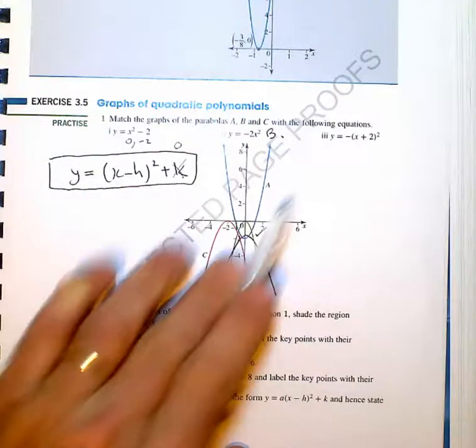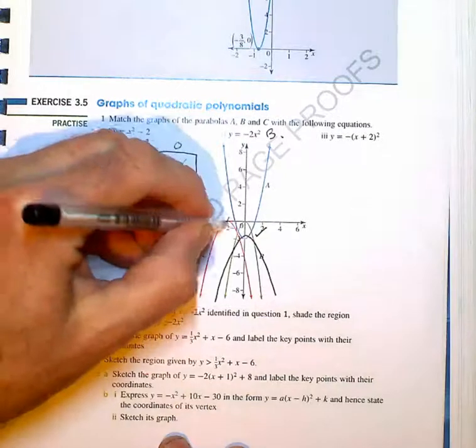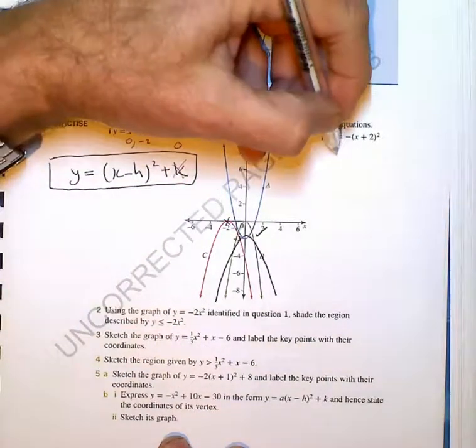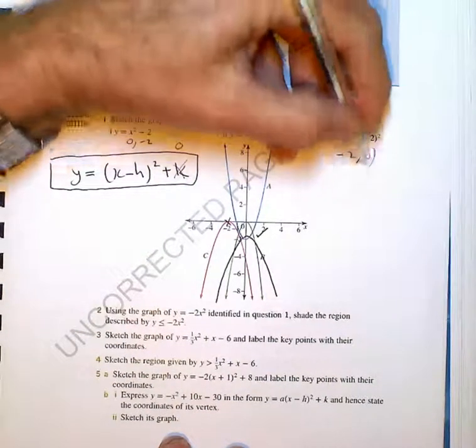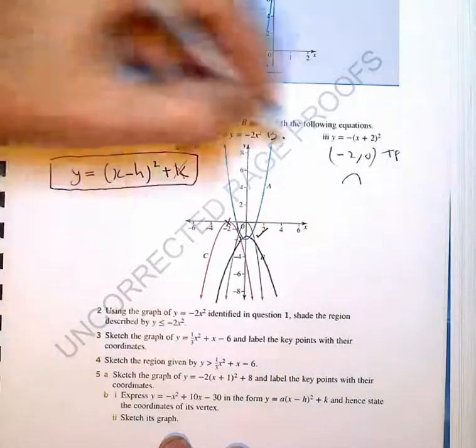And in the next instance, negative X squared, negative X plus two squared. That means we've got a turning point of negative two zero. And we have the shape like so. So that will correspond with C.